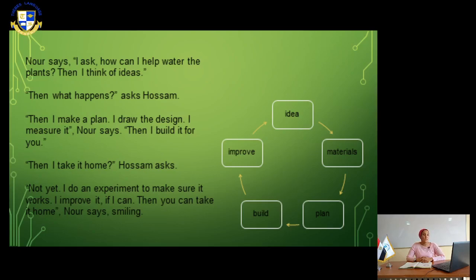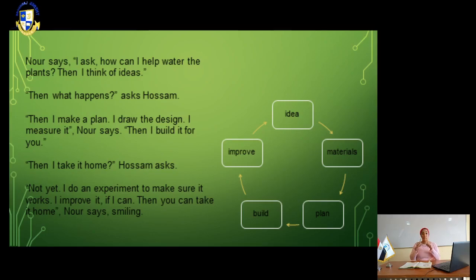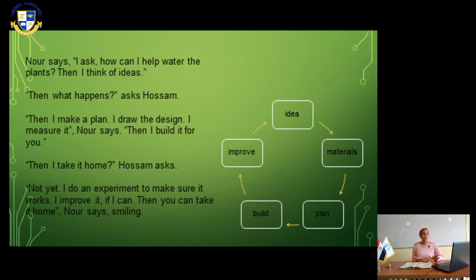Noor says, smiling. If you want to build or create a new design to be a good steward and help your environment: first, come up with an idea, put together the materials, and make your plan. Then build the design and improve it. Last, do an experiment to see if it works — then it's good to use.